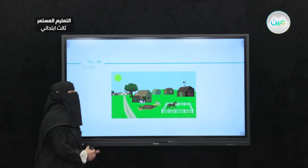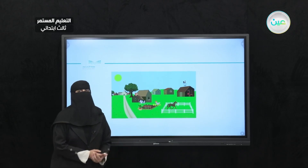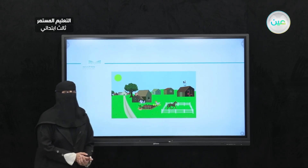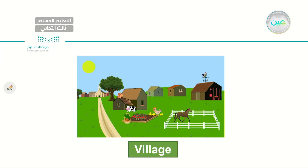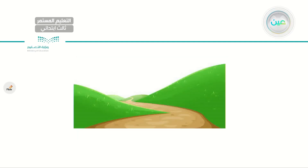How about this one? It's not a city here — we have a village. Let's read: village. How about this one? Can you name this landform? It is a valley. Let's read: valley.